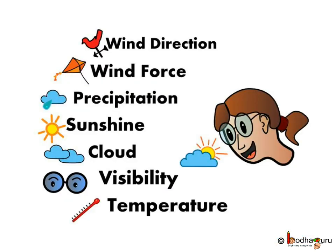Do you know what else makes weather? Apart from the sunshine, the weather is made up of different things like wind, precipitation, temperature, visibility, cloud, etc. I know you may not be familiar with some of these, so first we will see what these are and how they affect the weather.